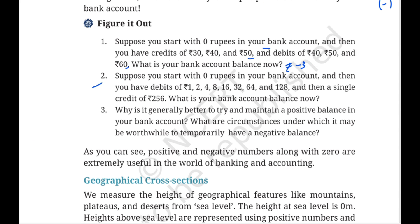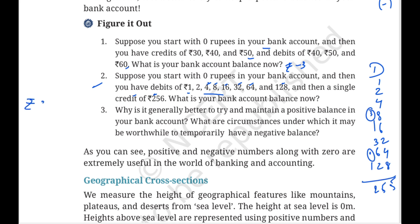Next sum: Suppose you start with 0 rupees in your account and then you have debits of rupees 1, 2, 4, 8, 16, 32, 64, and 128, and then a single credit of rupees 256. What is your bank account balance now? Total debit is 1+2+4+8+16+32+64+128 = 255. Credit is rupees 256. So 256 minus 255 = plus rupees 1. The bank account balance is plus rupees 1.